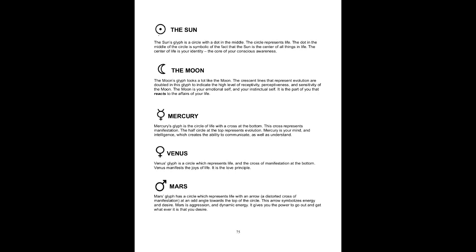The Sun. The Sun's glyph is a circle with a dot in the middle. The circle represents life. The dot in the middle of the circle is symbolic of the fact that the sun is the center of all things in life — the center of your life is your identity, the core of your conscious awareness.